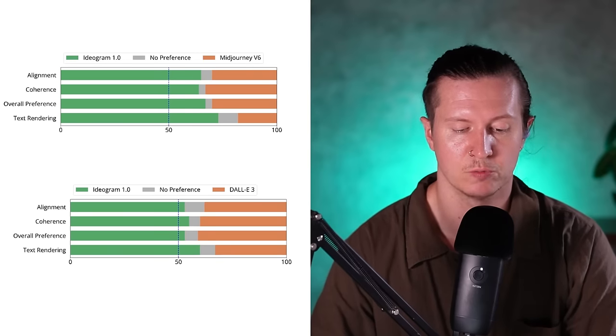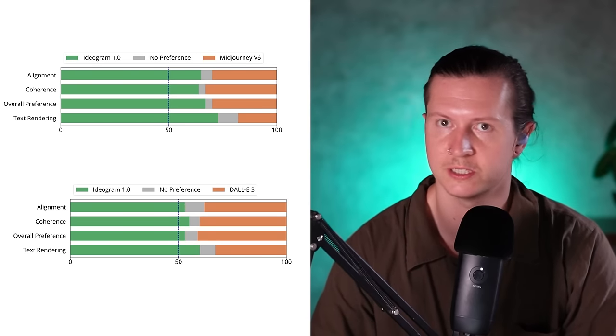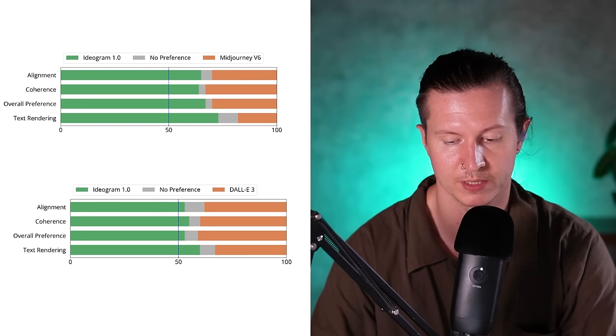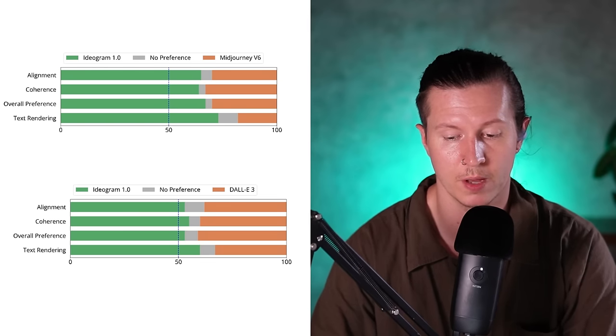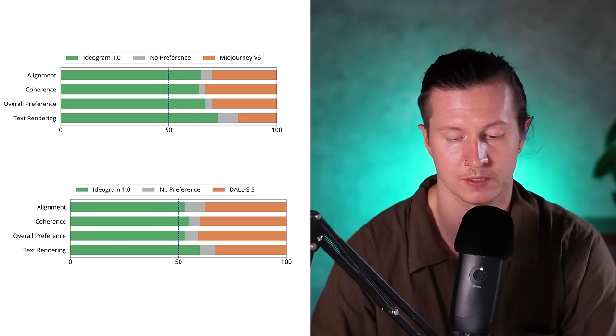It even looks as if it was a closer run race against DALL-E than against Midjourney, which surprises me. Especially on the overall preference metric, I'm very shocked that DALL-E outperformed Midjourney, and that it was not a lot closer. Some dodgy polling going on there, I'd say — it's like those Russian polls that come out and say Putin with 99.9% of the vote.